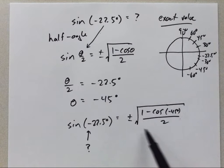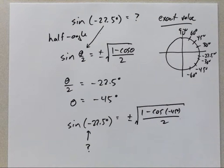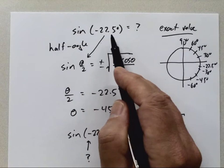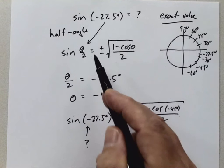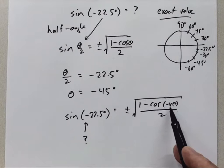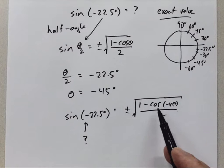Looking closer inside the formula, I have cosine of negative 45 degrees, and it turns out negative 45 degrees is a special angle — I actually know the value of cosine of negative 45 degrees. So I can plug in a number and do the calculation. By applying the half-angle formula, I ended up with the cosine of a special angle, so I'm no longer stuck.